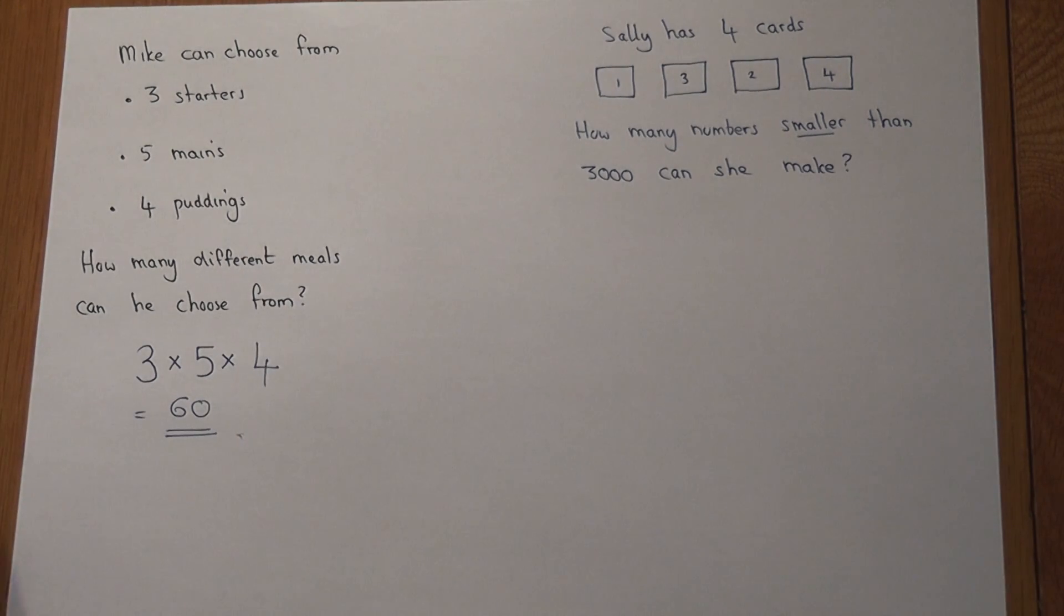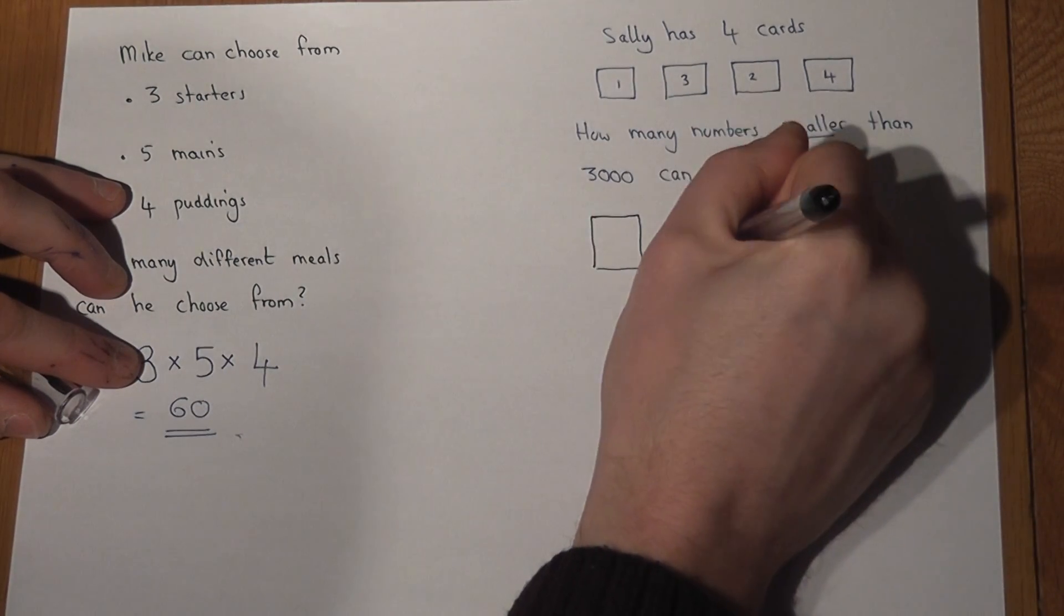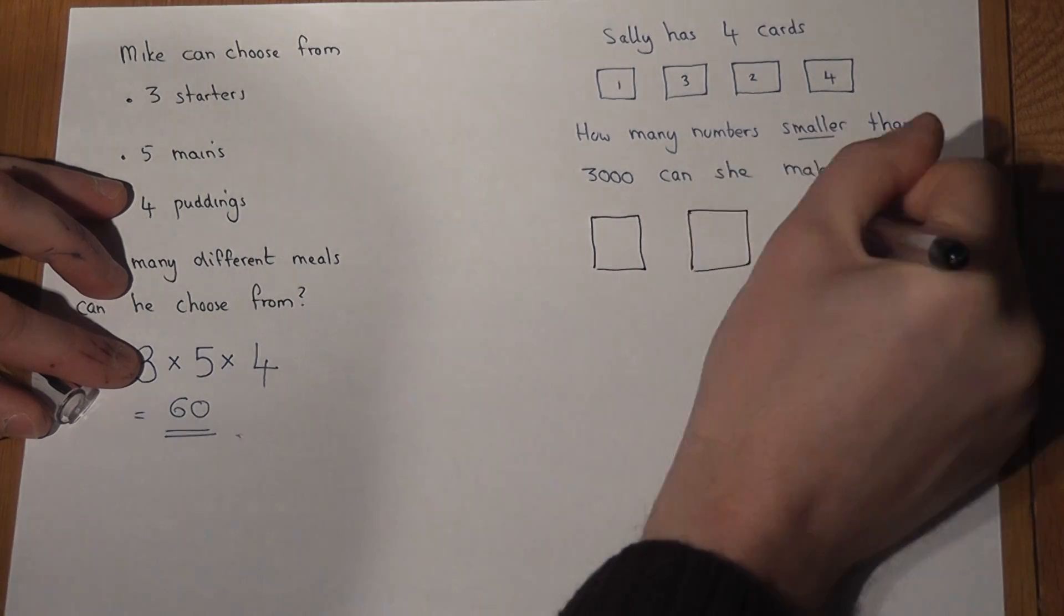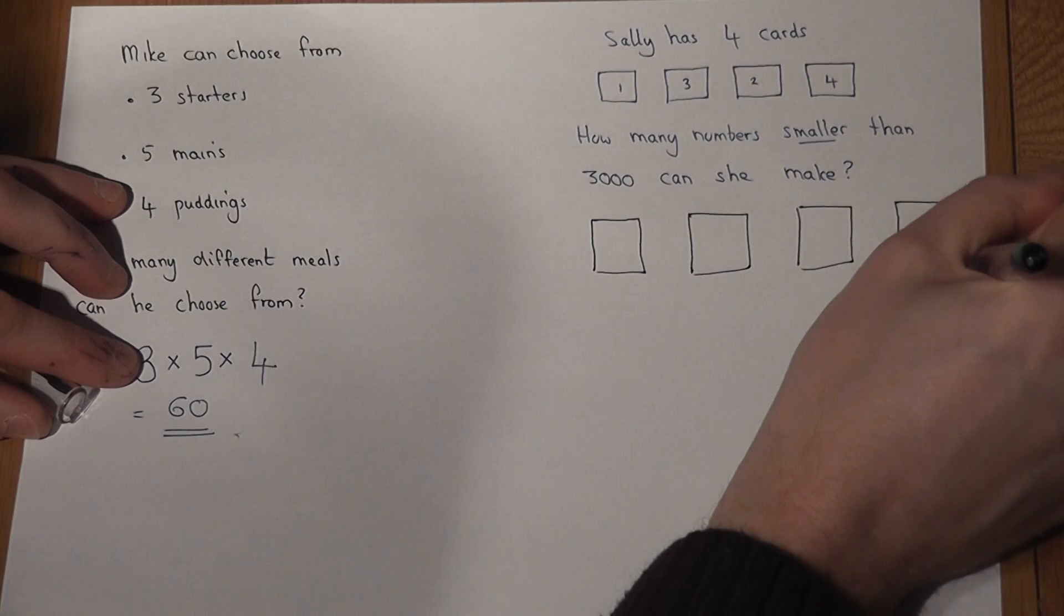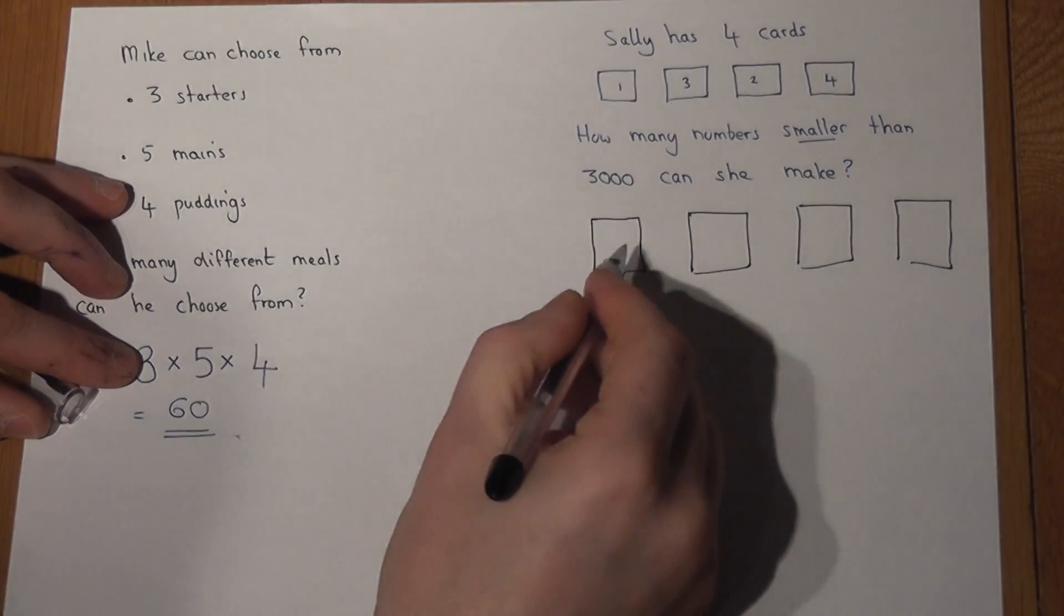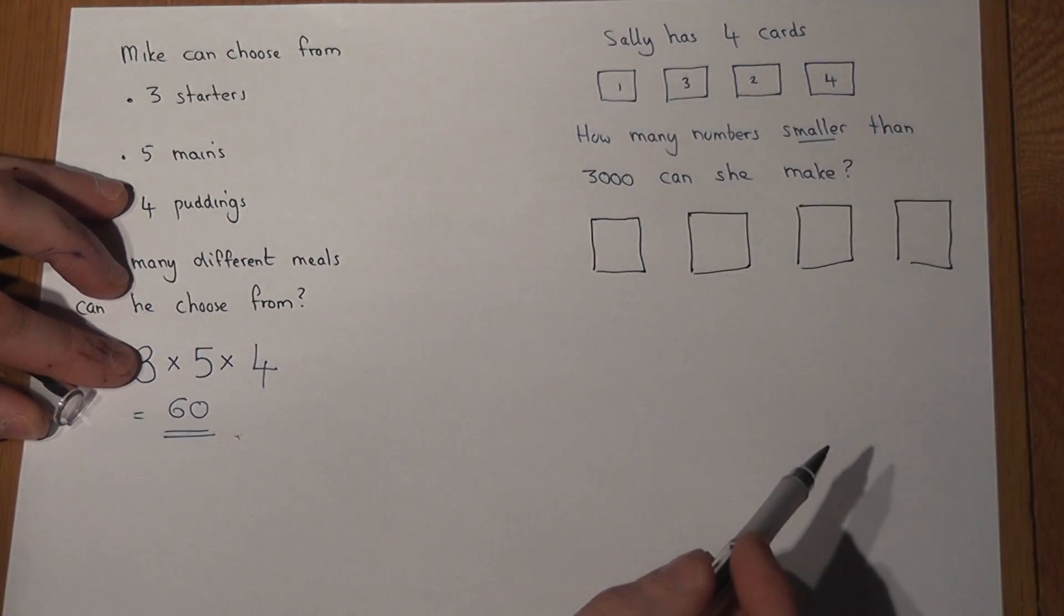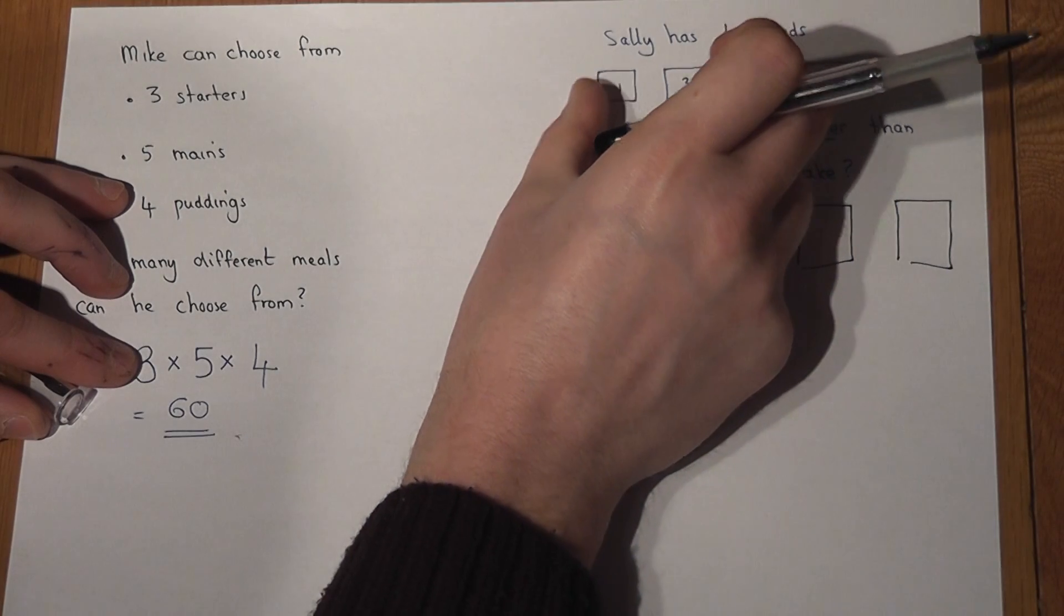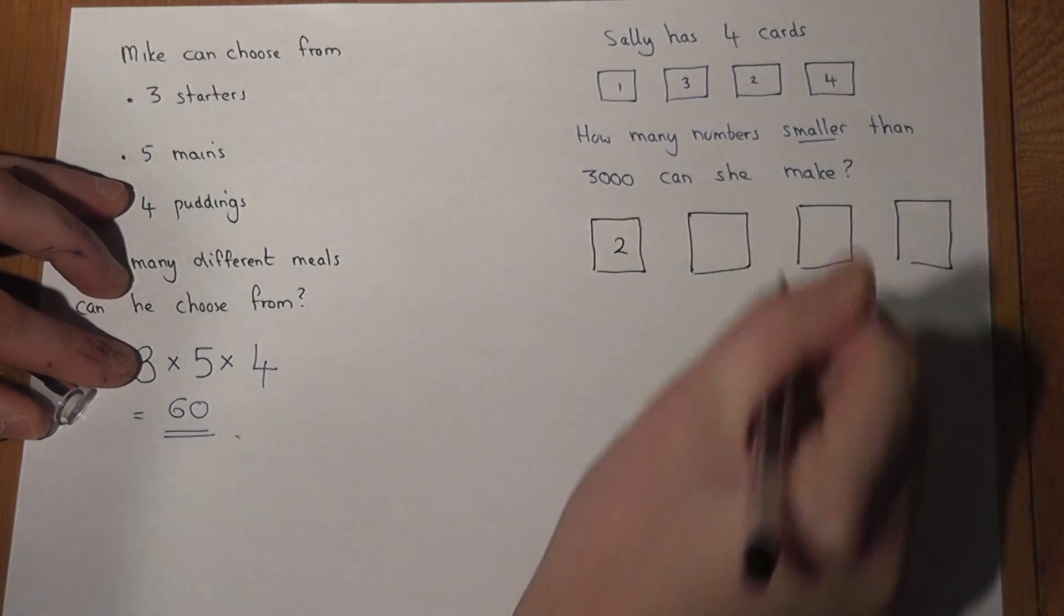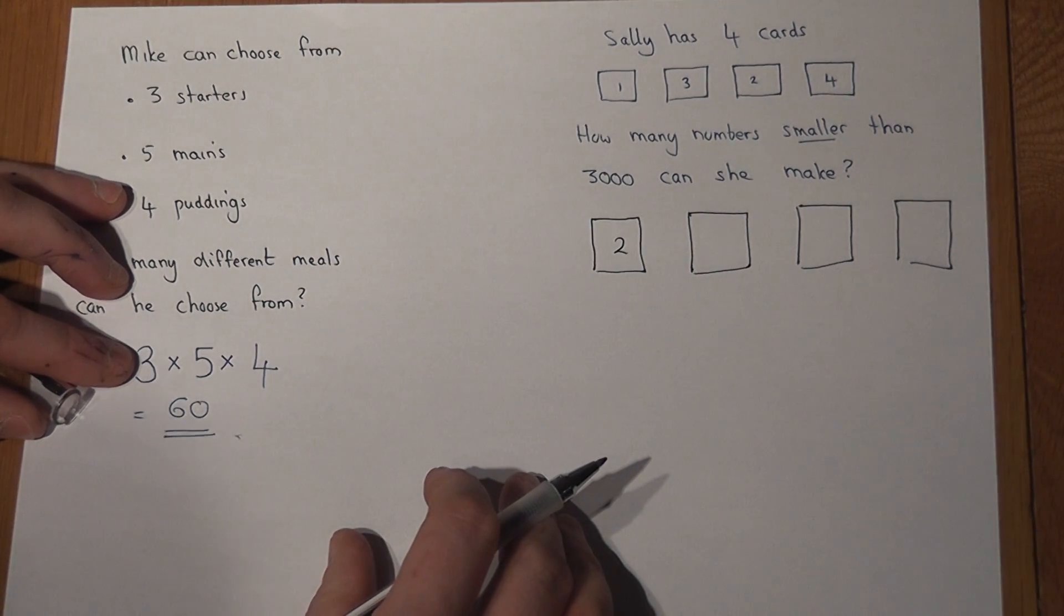Now then, imagine these four cards. To get a number which is smaller than 3000, the first card can only be either the 1 or the 2, so in terms of options there are only two options for a first number.